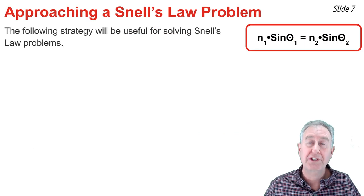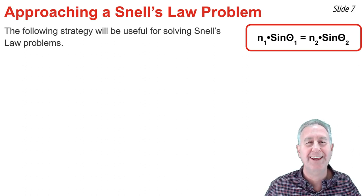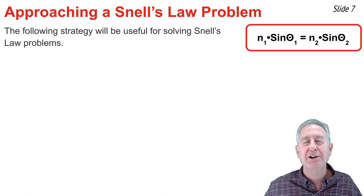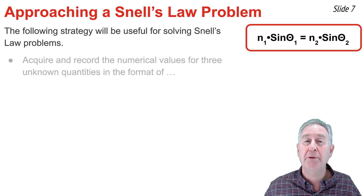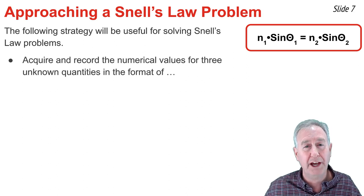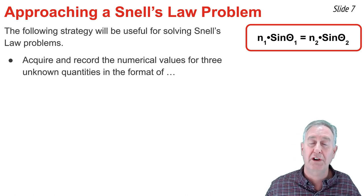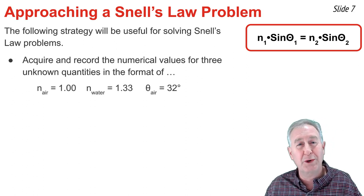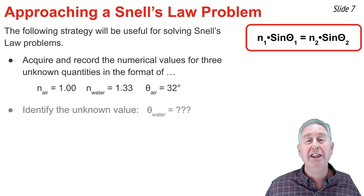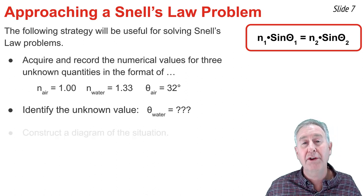In a typical physics course, Snell's Law is used to solve word problems in which you must predict the angle of refraction. Here is an effective five-step strategy. First, read the problem carefully and identify and record the known values. Snell's Law has four variables, so you'll need to know three values to solve for the fourth. Express your known values in terms of the symbols of the equation. Second, identify the unknown value.